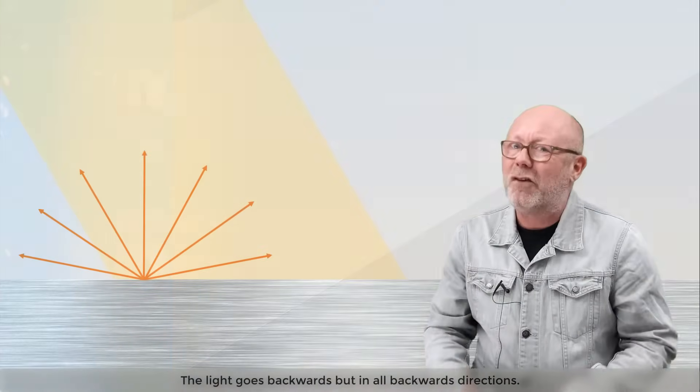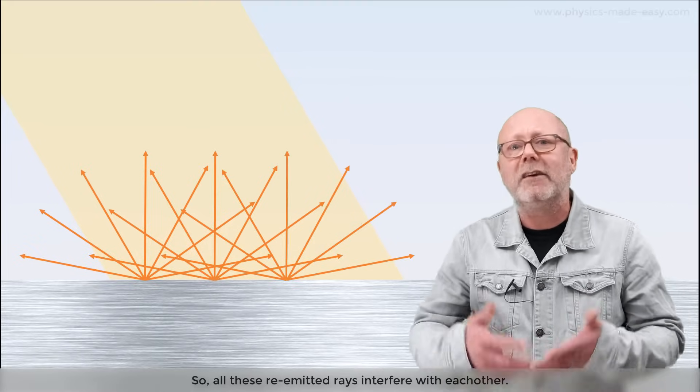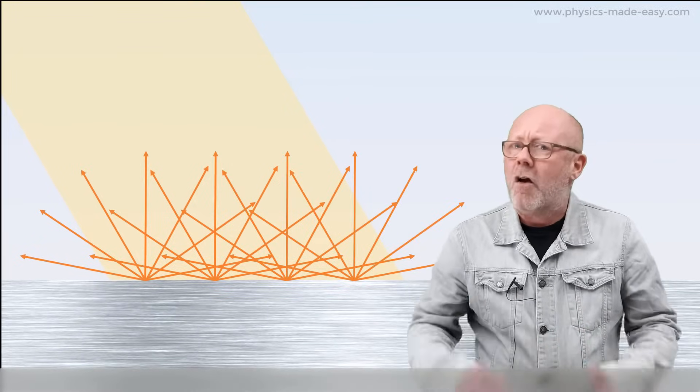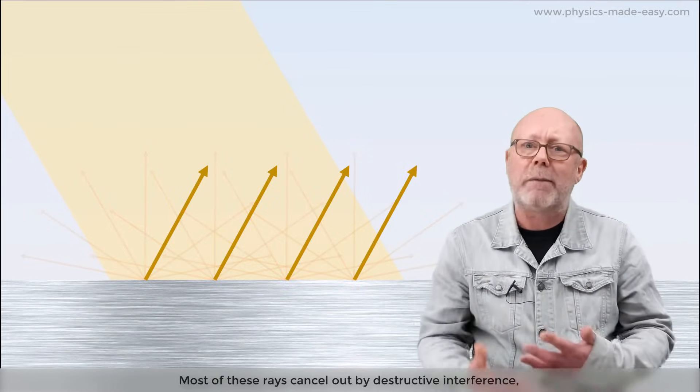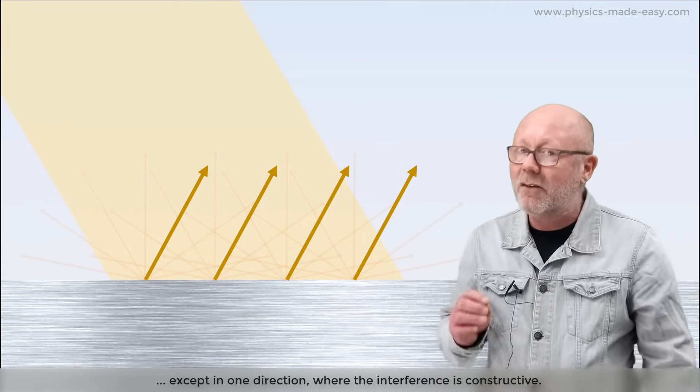The light goes backwards, but in all backward directions, so all these re-emitted rays interfere with each other. Most of these waves cancel out by destructive interference except in one direction, where the interference is constructive.